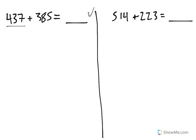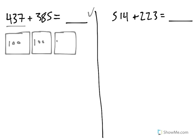What this means is we're going to start with 437. Now I'm going to do my best to draw a model that represents that. Each of these will represent 100. So we have 100, 200, 300, and 400.